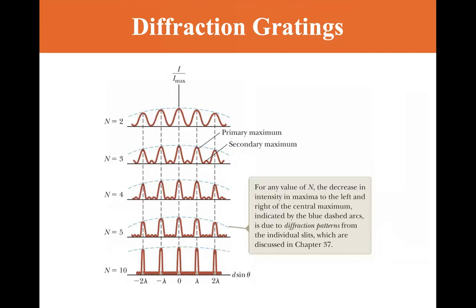For any value of N, the decrease in intensity from the maximum to the left and right of the central maximum, indicated by the blue dashed arcs, is due to the diffraction patterns from the individual slits, which are discussed in chapter 37 — so it's not part of this. We see a primary maximum and secondary maximums, and as N increases you get many more secondary maximums. For N equal 10, it just looks like a broad line but you can see there are a lot of different secondary maximums.